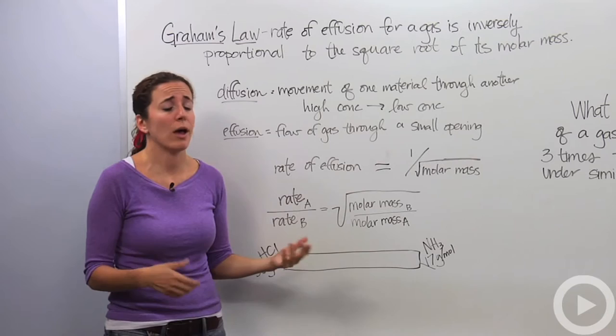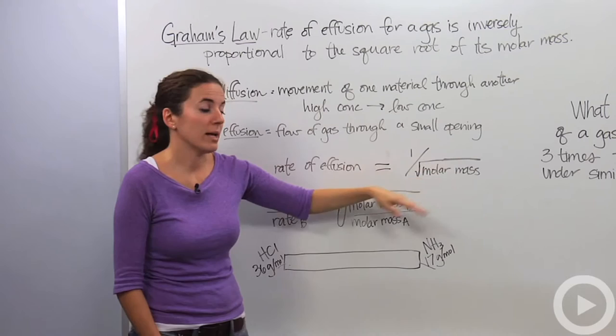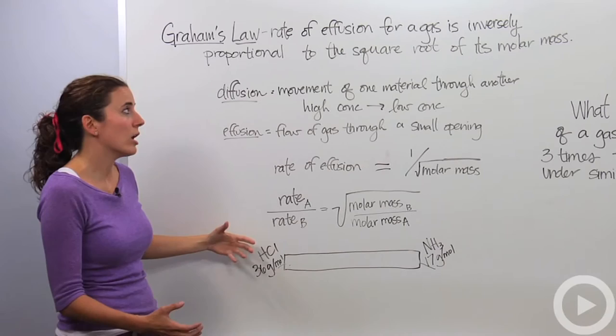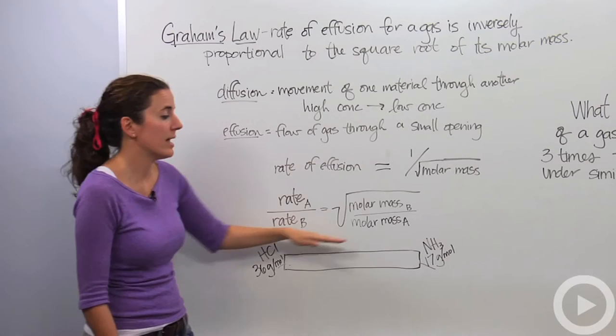So let's talk about what that actually means and how fast those particles go. All right. So we know the rate of effusion is equal to the inverse of the square root of the molar mass. So let's actually put that into action. Typically when you're talking about the rates, you're going to compare one gas to another.